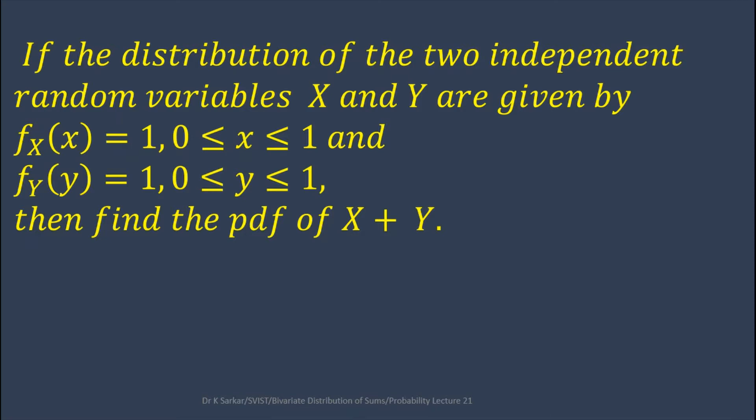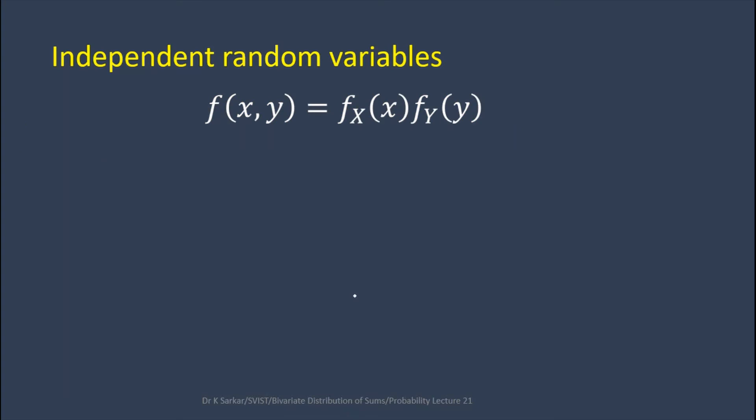Here is one question. If the distributions of two independent random variables X and Y are given by f_X(x) equals 1 for 0 ≤ x ≤ 1 and f_Y(y) equals 1 for 0 ≤ y ≤ 1, then find the PDF of X plus Y.